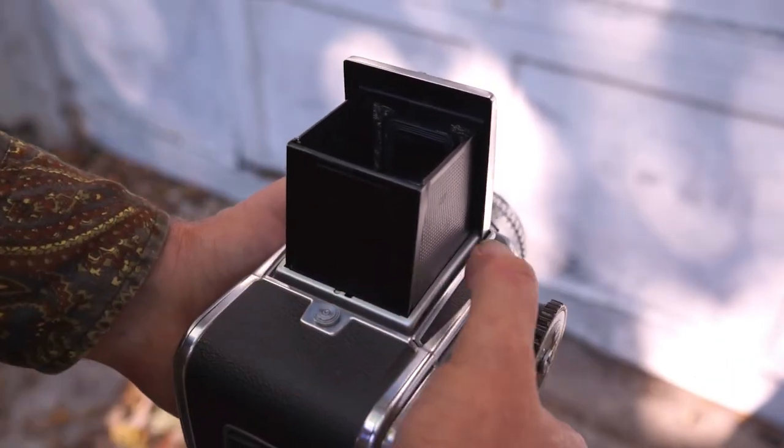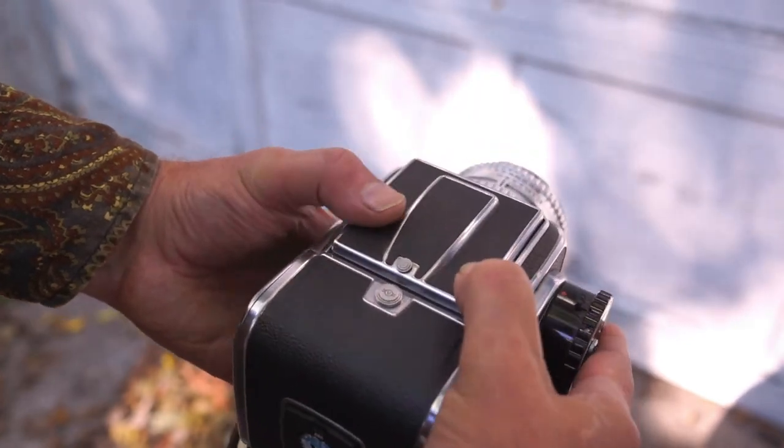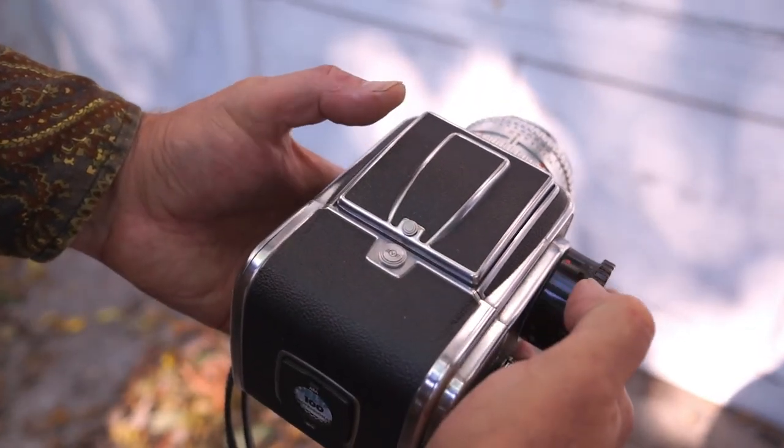To close the focusing hood, you just push the sides in, then the back, and then the front, and then it clicks shut.